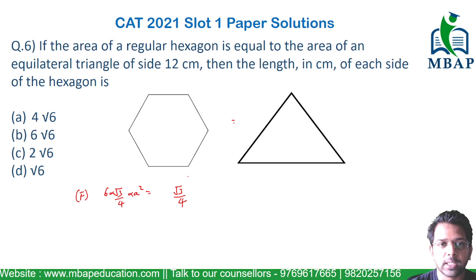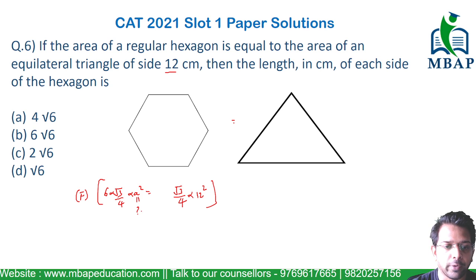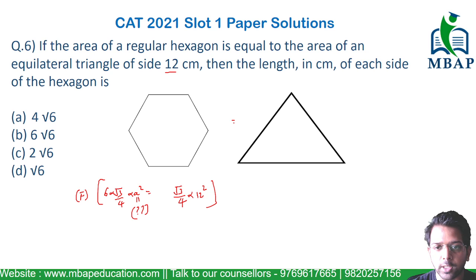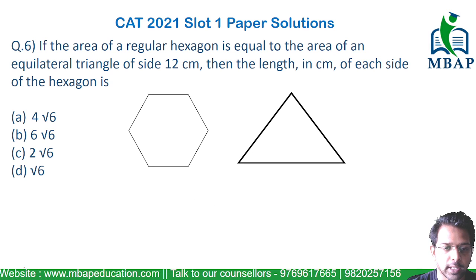What is a? Here, a is nothing but 12. So (√3/4) × 12² — if you equate them, the only thing we need to find out is the value of a on the LHS. I'm sure all of you would be able to solve the answer for this question.